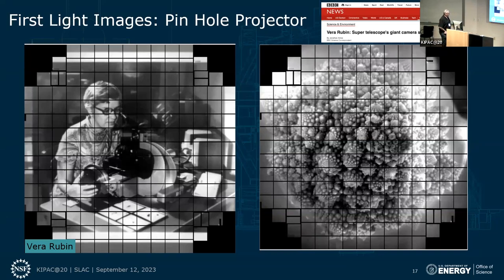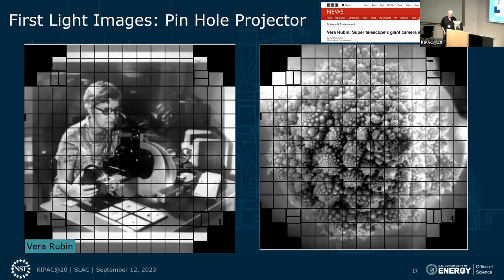When we finally put the focal plane together, we wanted to take some publicity images. But inside a lab without a telescope, we put together the opposite of a pinhole camera — a pinhole projector — where you could put any photograph in a little box and project it on the focal plane. It seemed fitting to have the famous image of Vera Rubin. I also bought a piece of Romanesco broccoli at a local grocery store and put that in the box. The broccoli image got a lot of play — even the BBC said 'Vera Rubin super telescope giant camera spies broccoli.' You can't buy publicity like that.